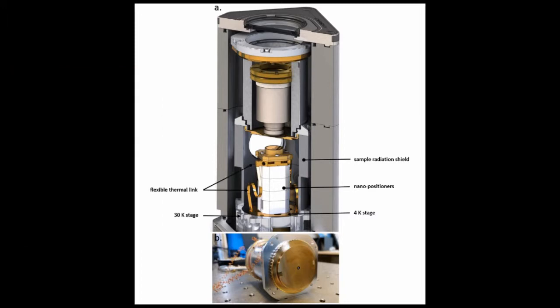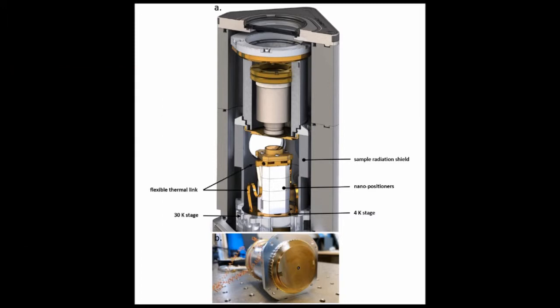A flexible thermal link connects the 4K stage to the ATS platform, holding the sample. The positioners not only control movement, but pose significant thermal load and will limit the agility of the system without the ATS platform.